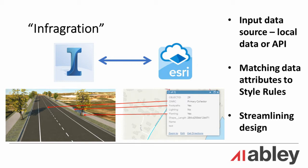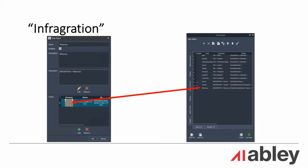As you can see from this image, the attributes inputted determine the design elements in the 3D scene. You can draw a stretch of road, for example, and assign it a hierarchy — in this case motorway — and the style rule in InfraWorks will visualize it as a divided four-lane highway. The same can be done with any attributes and visualizations you can think of.